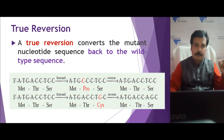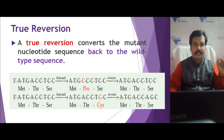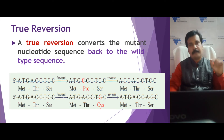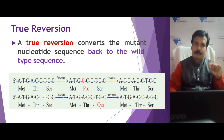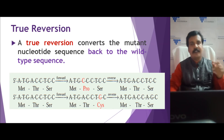A forward mutation occurs at a particular location: ACC codes for threonine, and instead of adenine, a mutation converts it to cytosine. So CCC codes for a different amino acid called proline. When reverse mutation occurs at the same location, cytosine is converted back to adenine, restoring proline back to threonine. This type is called true reversion.